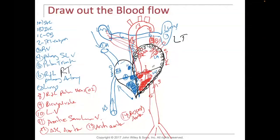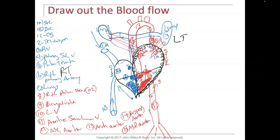After the descending aorta, it comes down into the stomach area. Let's call this number fifteen, the abdominal aorta. Then it goes all the way down into the thighs, where you have the right and left common iliacs. Up here on the arch, let's call the three branches A, B, and C.